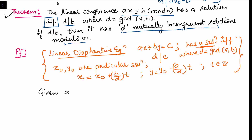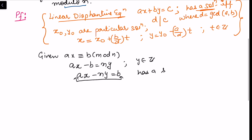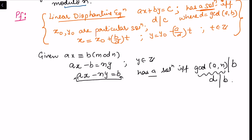We are given ax ≡ b (mod n). This has an equivalent form: ax − b = n·y for some integer y, or ax − ny = b. This is the same as a linear Diophantine equation, so it has a solution if and only if gcd(a, n) divides b. Since we have considered d = gcd(a, n), this confirms: it has a solution if and only if d divides b.